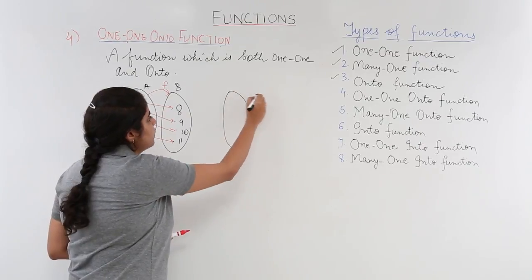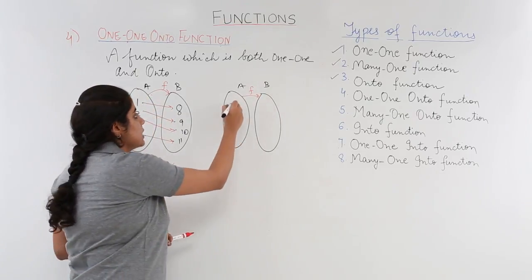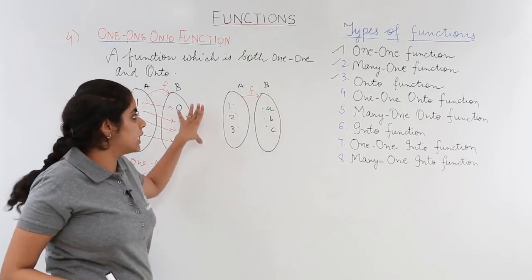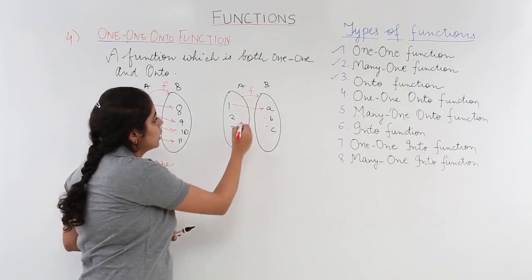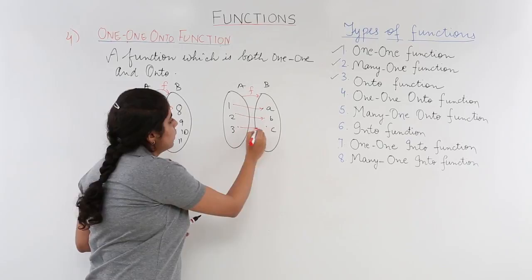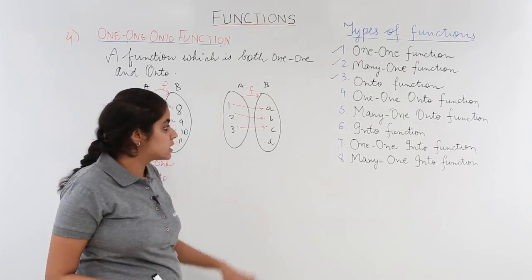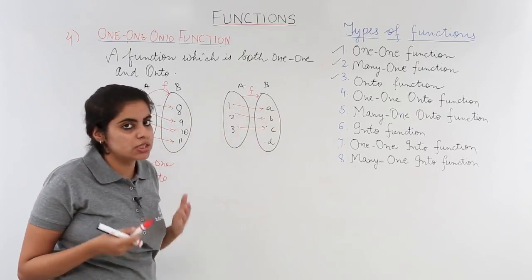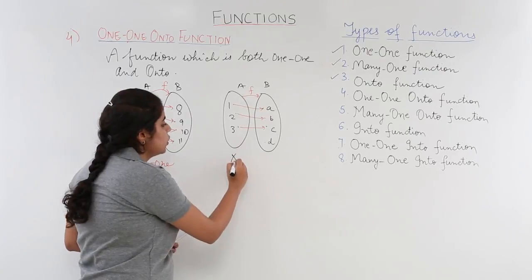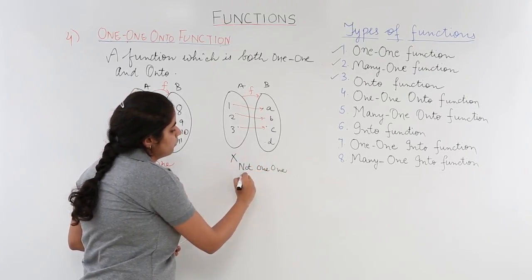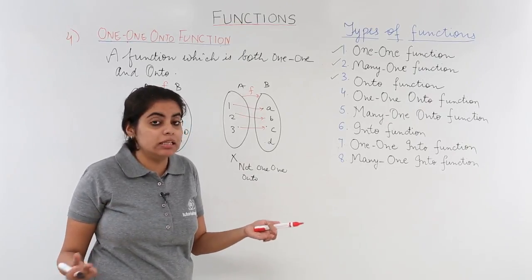Now if the diagram were somewhat different — say we had elements one, two, three in A and a, b, c, d in B — and the mapping was such that one is associated with a, two with b, three with c, but d is left unassociated, then different elements of A have different associations so it is one-one, but it is not onto because d is left unassociated. So this is not a one-one onto function.